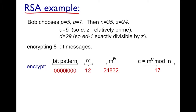We need to choose e such that e and z are relatively prime. We can choose e = 5, since 5 and 24 are relatively prime. We then choose d = 29, because 29 × 5 − 1 = 144, which is exactly divisible by 24.